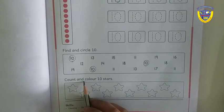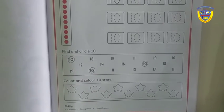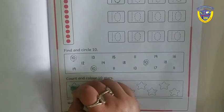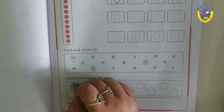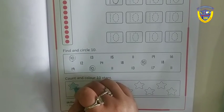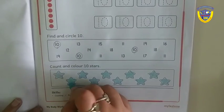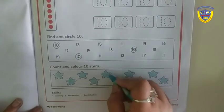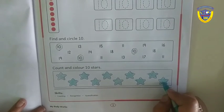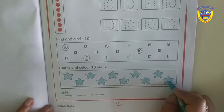Next is count and color 10 stars. For this first of all we color it and then count it. Now we count it. 1, 2, 3, 4, 5, 6, 7, 8, 9, 10. We have 10 stars. In the same way you have to complete this page.